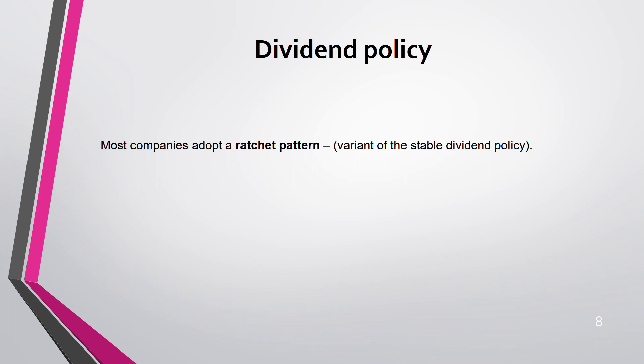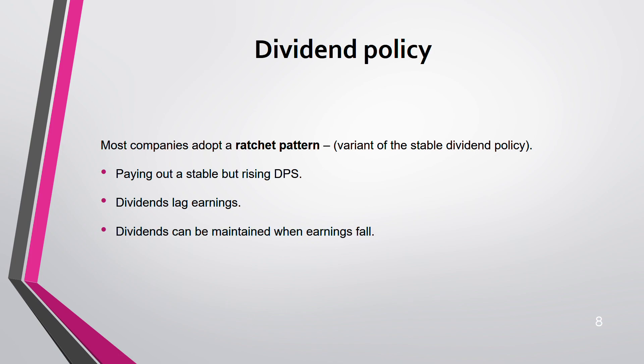The ratchet pattern is a variant of a stable dividend policy. It means you pay out a stable but rising dividend per share. Dividends lag earnings — there is a difference between earnings received and dividends. Dividends may be maintained even when earnings fall. Most companies now adopt this approach. It avoids the bad news signal because maintaining or rising DPS is a good signal and avoids altering investors' tax positions.